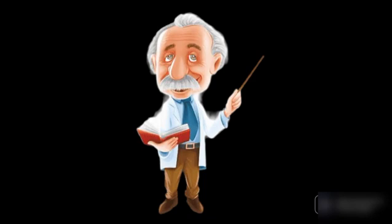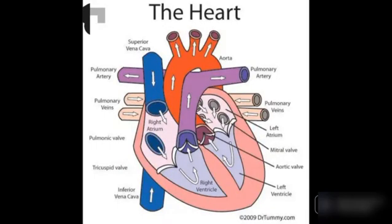The heart has two upper thin-walled chambers called auricles and lower thick-walled chambers called ventricles. The right side of the heart is separated from the left side by what we call the septum. From the diagram, we can see all structures of the heart: the two large veins, the superior vena cava and the inferior vena cava. The superior vena cava is positioned anteriorly and the inferior vena cava posteriorly. They bring blood from all parts of the body except the lungs.